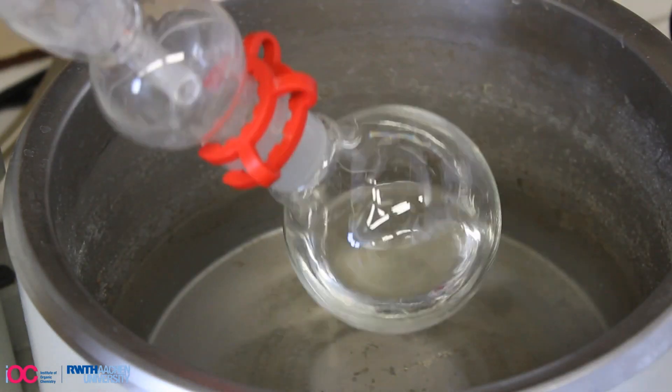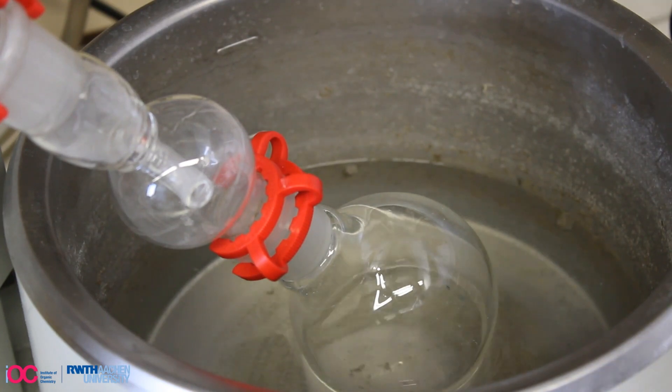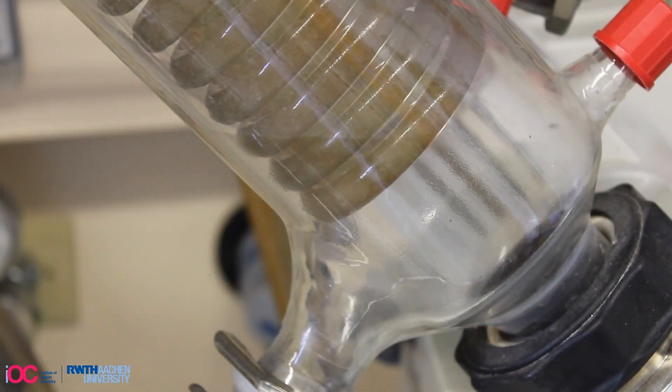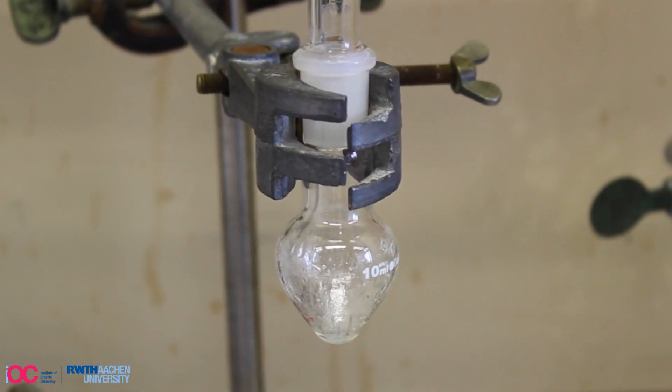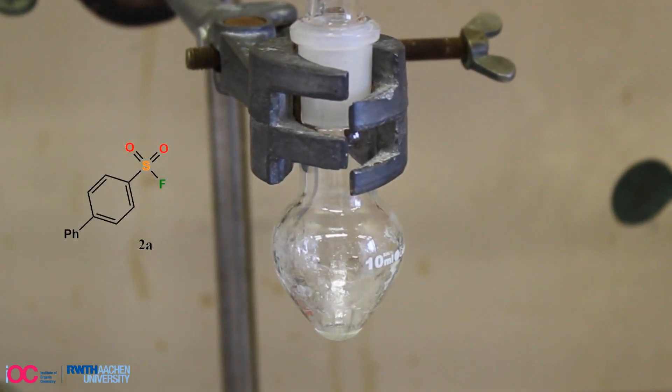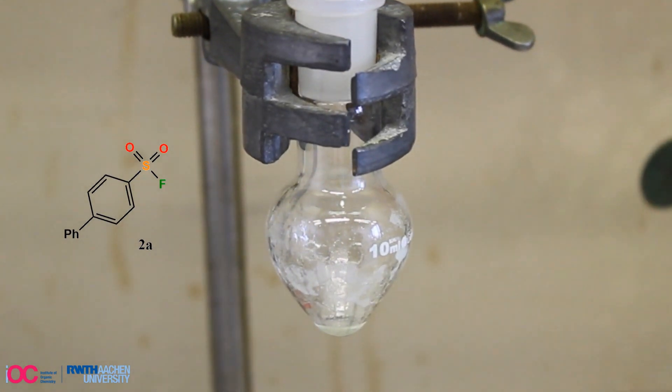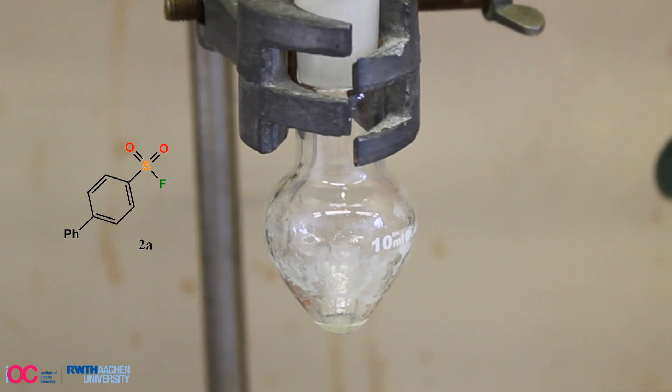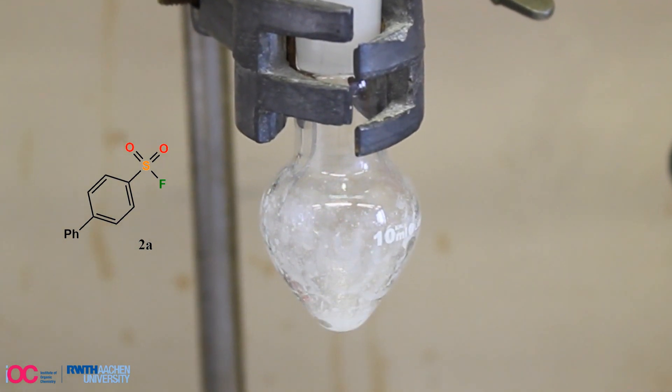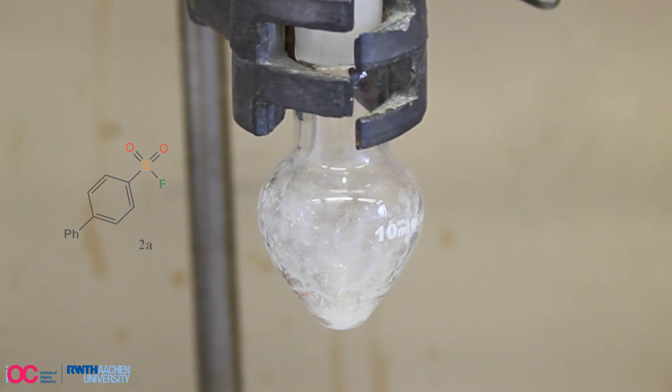Finally, the solvent is removed at reduced pressure, either at 40 or 20 degrees Celsius water bath temperature, depending on the volatility of the corresponding product. Then the product can be transferred into a smaller reaction vial and dried on high vacuum if the volatility allows. In our case, sulfonyl fluoride 2A is obtained as a colorless solid in high yield with a purity above 98%.